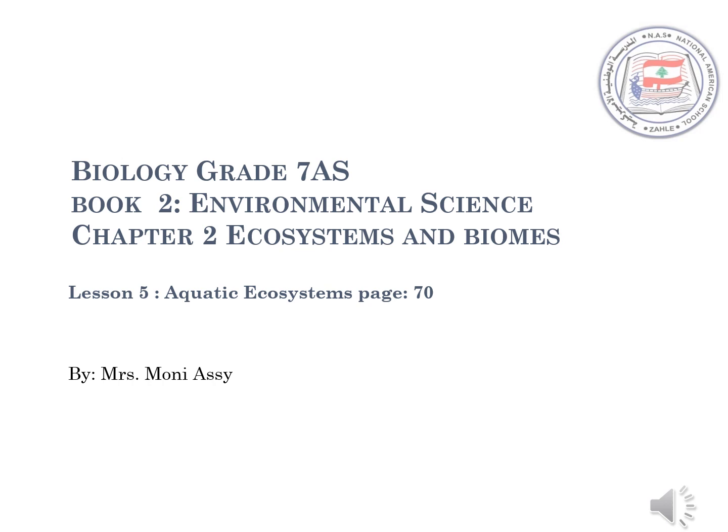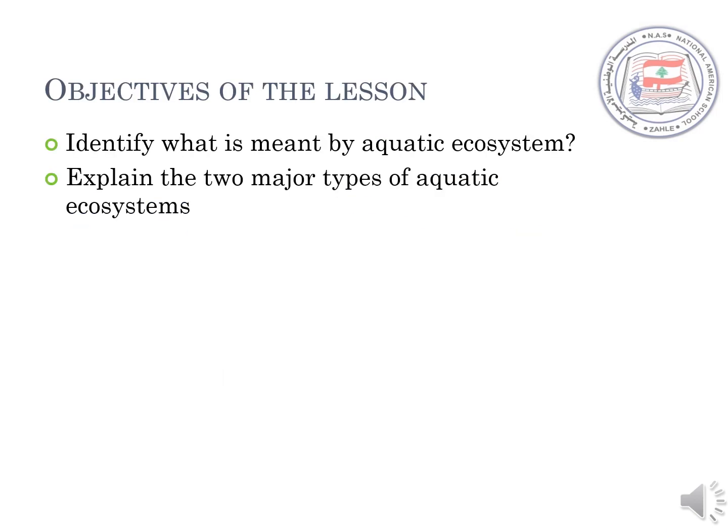Good morning, grade 7 students. This is Ms. Moni. Today we're going to continue our second chapter, Ecosystems and Biomes, Lesson 5, Aquatic Ecosystems. So please open your books to page 70. The objectives of the lesson today are to identify what is meant by the aquatic ecosystem, and also we're going to explain the two major types of aquatic ecosystems.